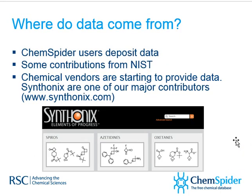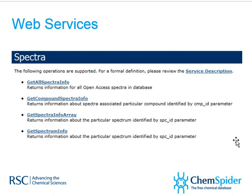Where did the data come from? Certainly a lot of ChemSpider users depositing it. We've got some contributions from NIST, but there's some exciting news I'll tell you about later. We have chemical vendors starting to provide data, and if any of you would like to participate, I'll give you details later. By providing access to the data with web services — a programming layer on top of the database for people to interact with the data — you can get all the spectra information, compound information, and spectrum info. By pulling this information together, other people can do things with what we've got available.